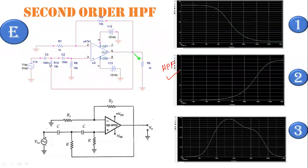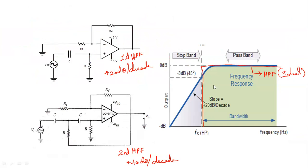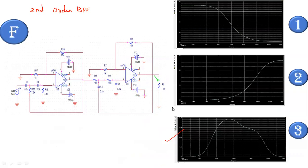We can also see a second order high pass filter. Two RC combinations of high pass filters are cascaded and given to the non-inverting terminal, which gives sharp responses. For a first order high pass filter we have plus 20dB per decade increment, and for a second order high pass filter we have plus 40dB per decade increment, giving sharp responses.